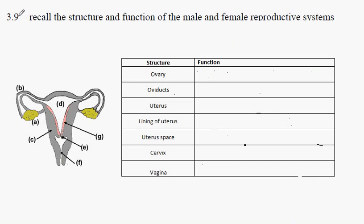IGCSE Biology, Syllabus Statement 39B. Here we're discussing the female reproductive system structure and function.